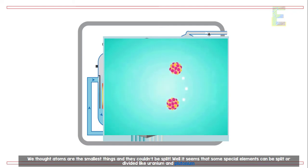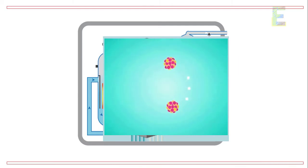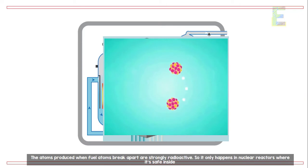We thought atoms are the smallest things and they couldn't be split, right? Well, it seems that some special elements can be split or divided, like uranium and plutonium. And when uranium atoms split, they give off a large amount of heat. The atoms produced when fuel atoms break apart are strongly radioactive, so it only happens in nuclear reactors where it is safe inside.